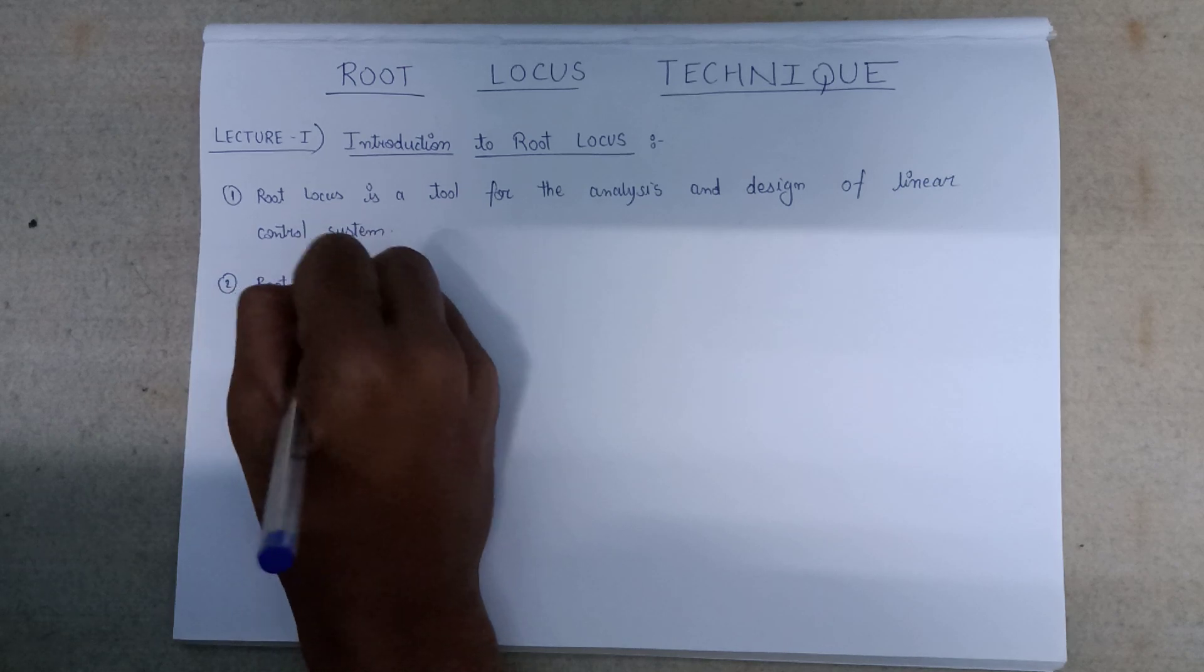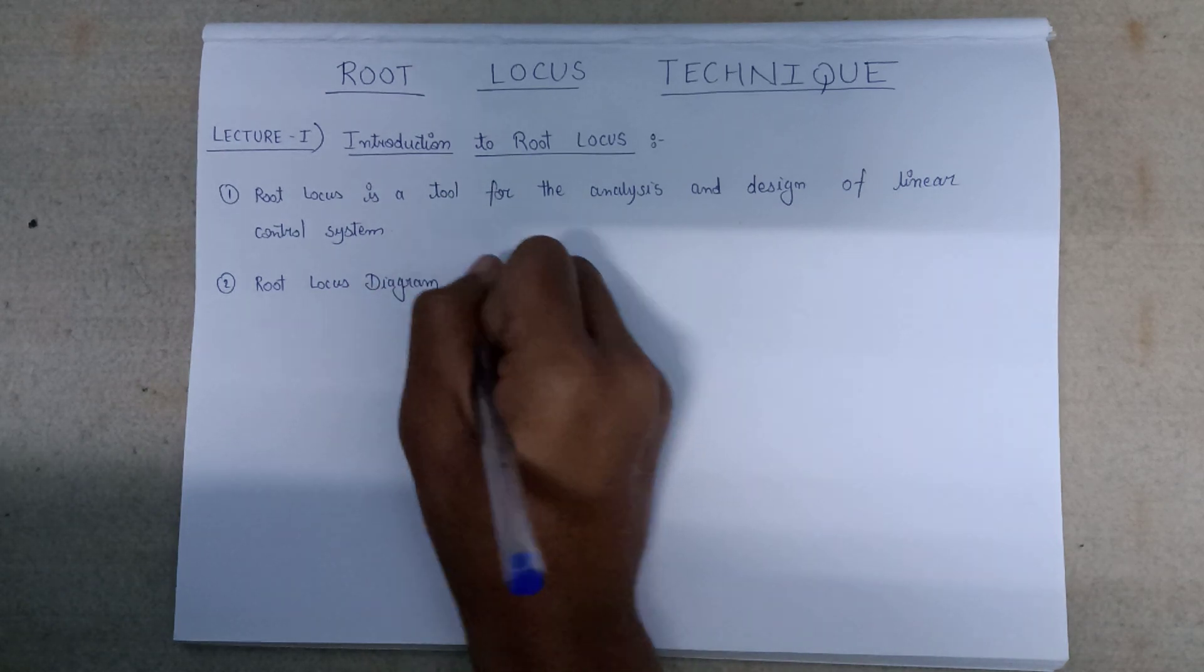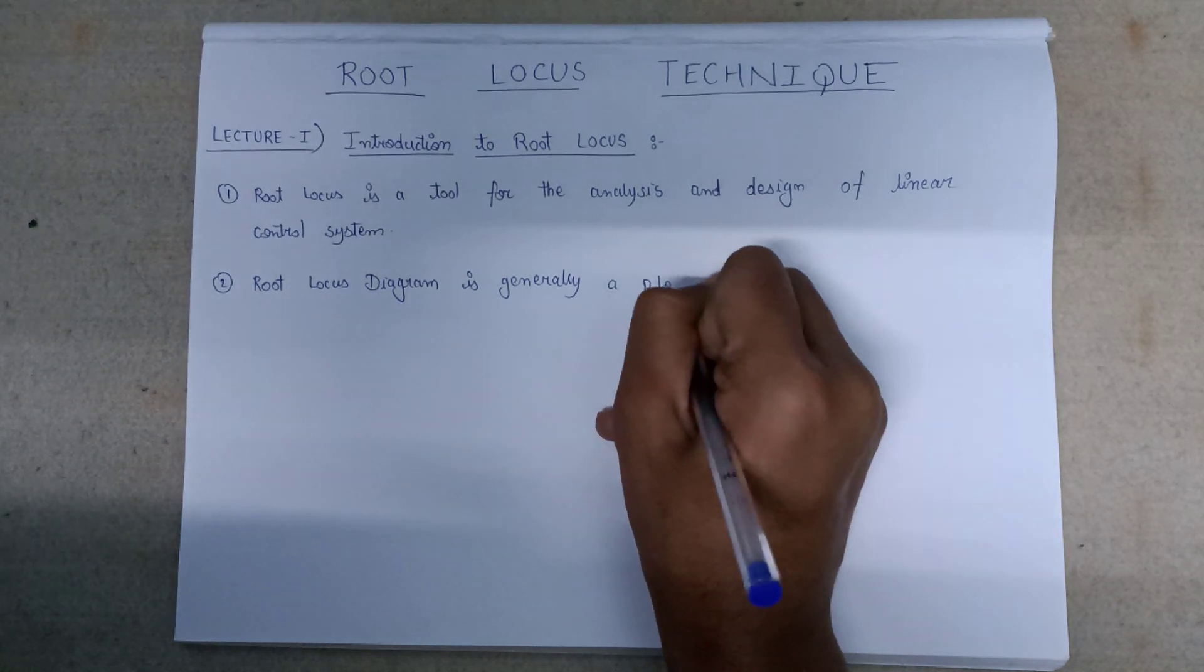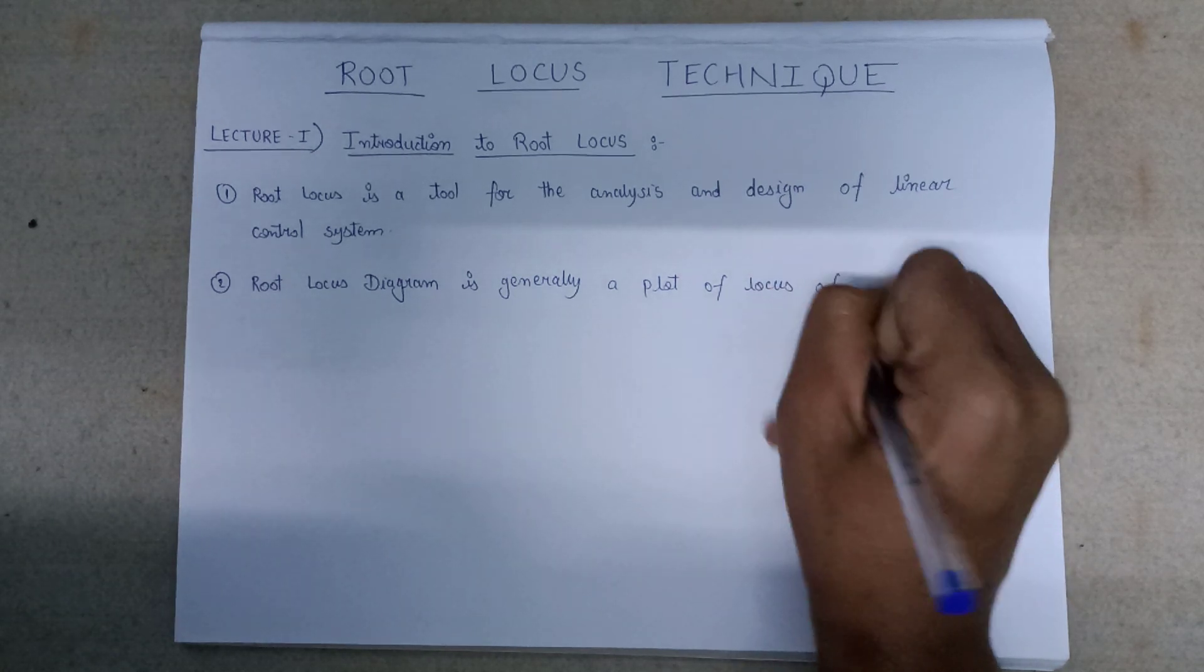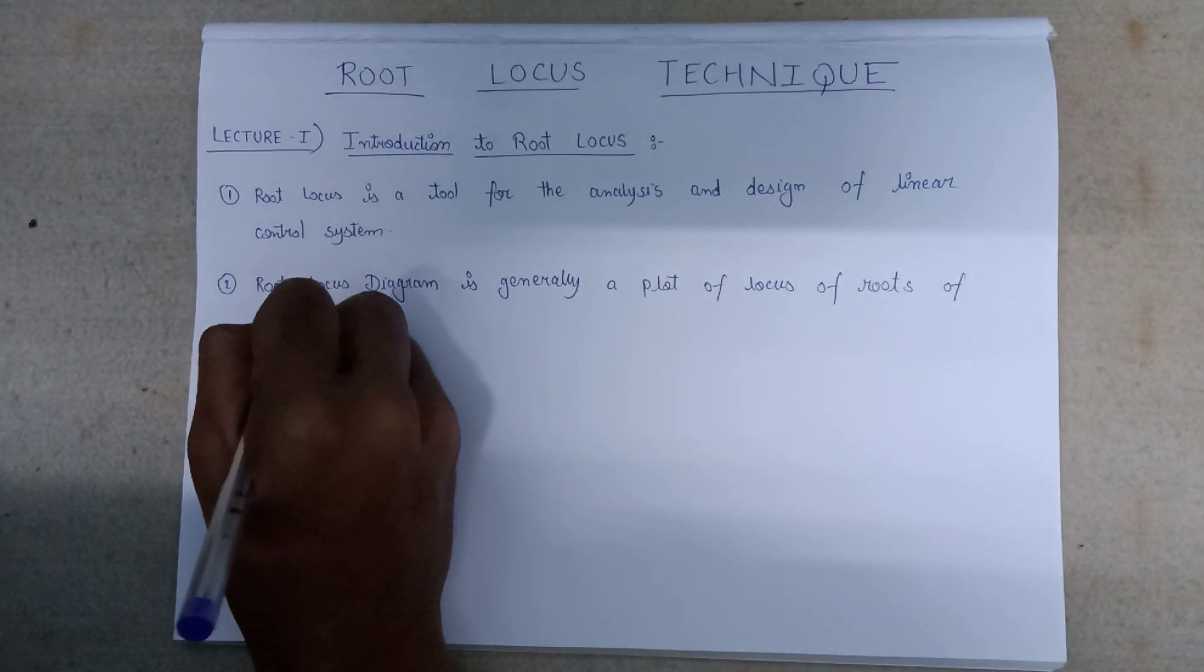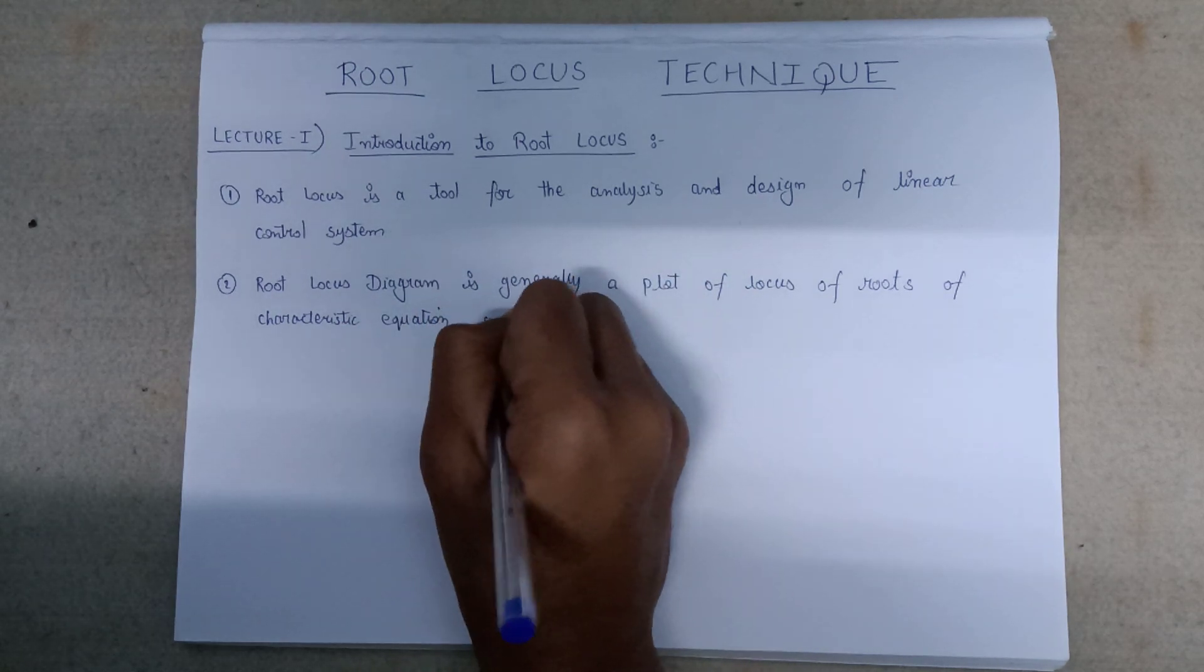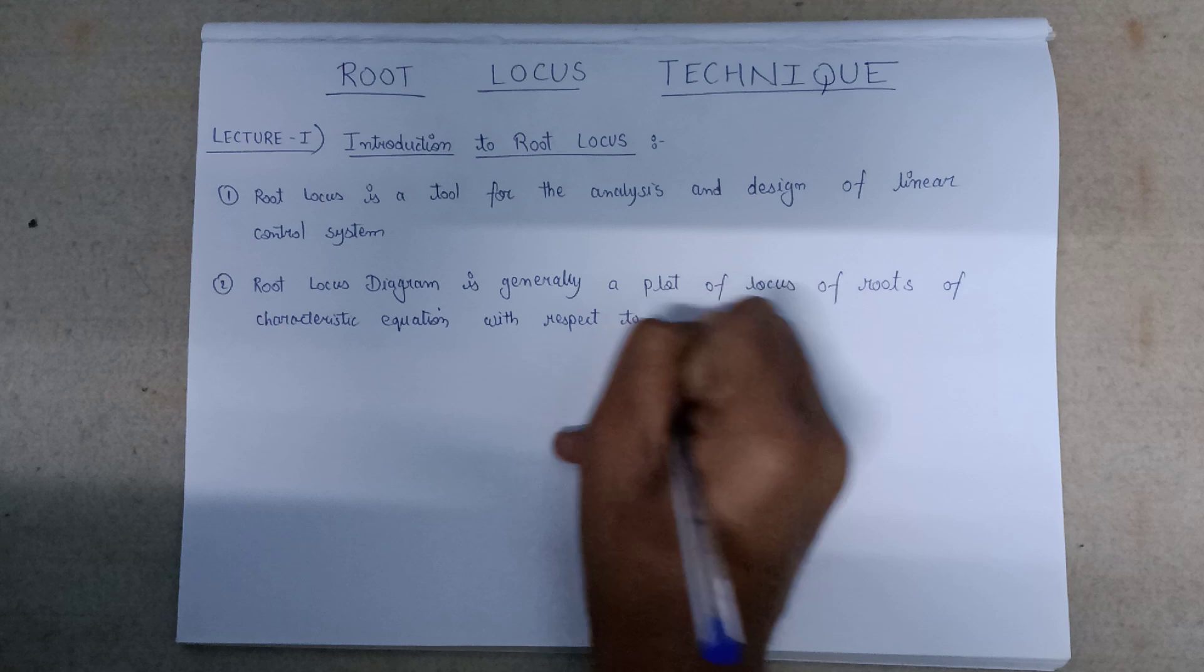Root Locus Diagram is generally a plot of locus of roots of characteristic equation with respect to gain.